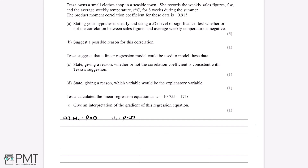We need to find what is called the critical value. We look in our table of critical values for when N equals eight, because she recorded for eight weeks — that's our sample size — and when the significance level is 5%, which is 0.05. Looking at the table, we find that the critical value is minus 0.6215. It's negative because we have a negative correlation in our question.